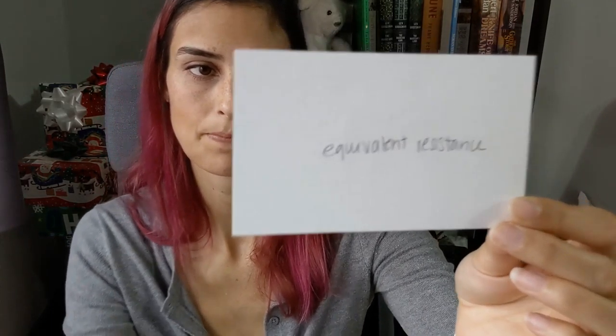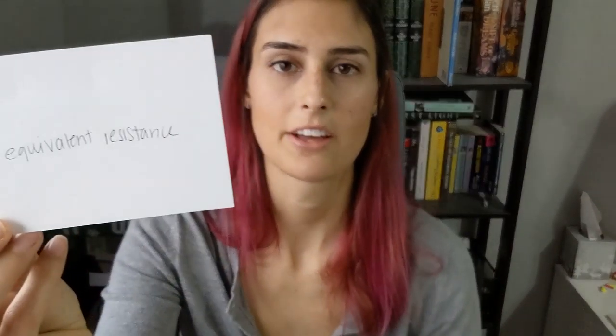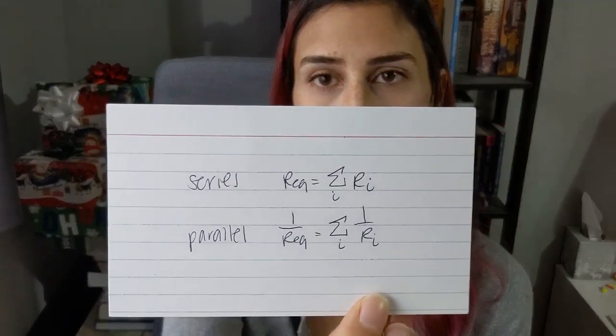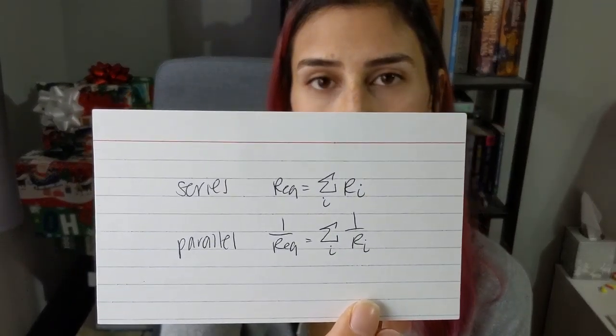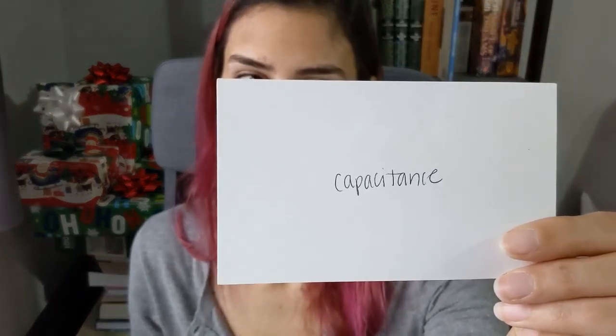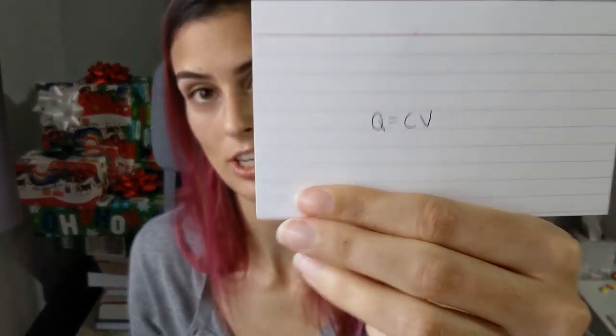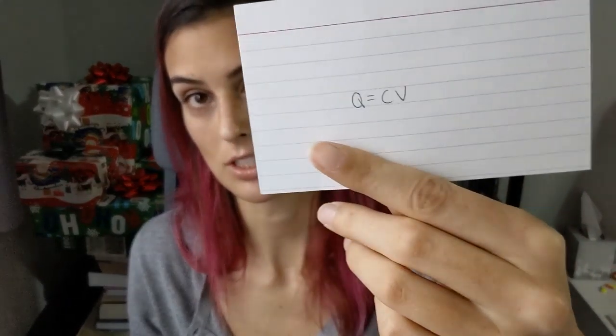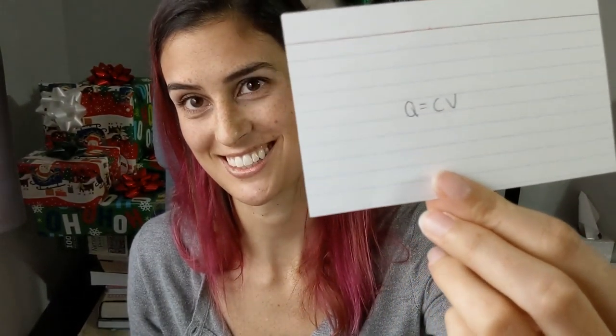If resistors are in parallel, one over the equivalent resistance is the sum of one over the individual resistances. Capacitance: Q equals CV, where Q is the charge, V is the voltage, and C is the capacitance.